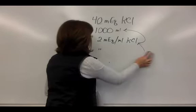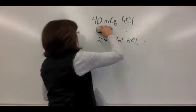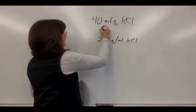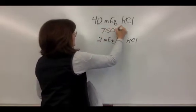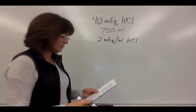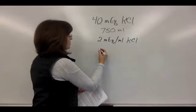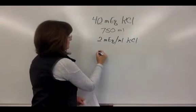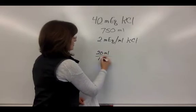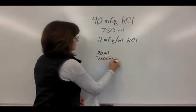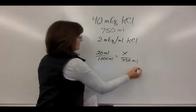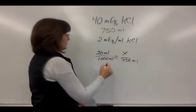But let's say that instead of one liter you have 750 mLs left in the bag. There are a couple different ways to do this. You can do it as a ratio: you know that you're going to be adding 20 mLs of your solution to a thousand mLs, so that becomes x over 750 mLs.